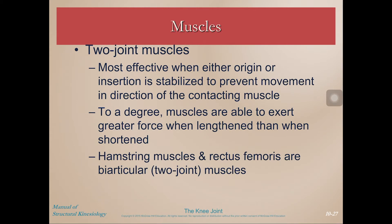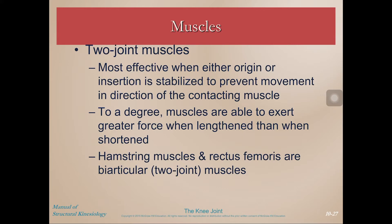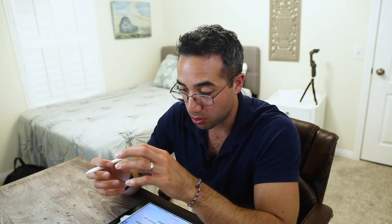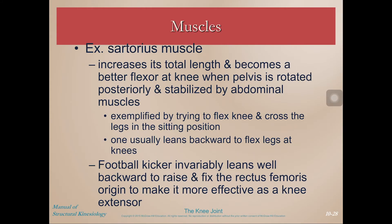We have a lot of two-joint muscles that cross the knee: rectus femoris, biceps femoris, semitendinosus, semimembranosus, sartorius, and gracilis — that's six. And technically gastrocnemius is a two-joint muscle that crosses the knee but it crosses the ankle as well, not the hip. These six muscles that cross the hip and the knee are most effective when either the origin or the insertion is stabilized, which prevents movement in the direction of the contracting muscle. To a degree, these muscles are able to exert greater force when lengthened than when shortened. This is why, for instance, in a sprint start you don't want to be crouched so low that your hips are low to the ground with your knees completely flexed — you want a little bit of knee extension as your hips are also extended to lengthen your hamstrings appropriately. It's also why during football kicking the kicker invariably leans backwards — to raise and fix the rectus femoris origin to make it more effective as a knee extensor.